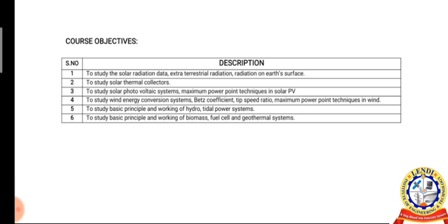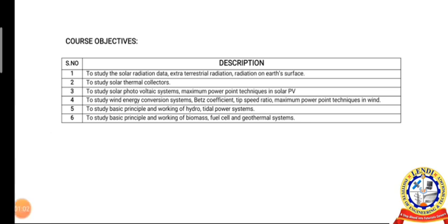CO2: to study solar thermal collectors. CO3: to study solar photovoltaic systems and maximum power point technique in solar PV. CO4: to study wind energy conversion systems, blade coefficient, and tip speed ratio, and maximum power point technique in wind.